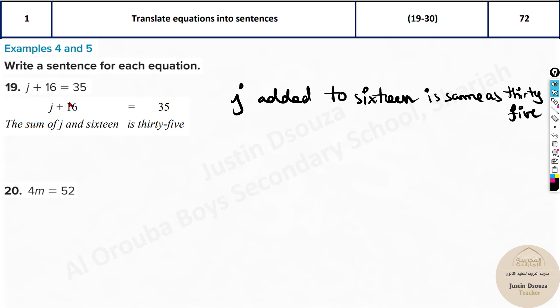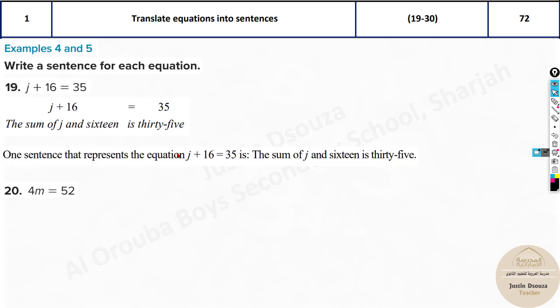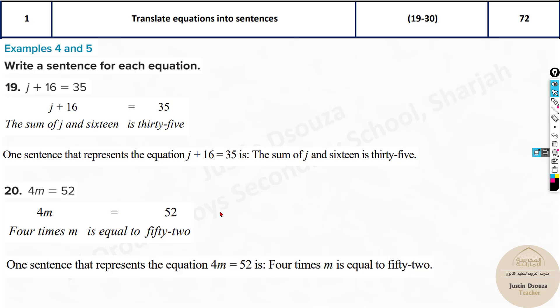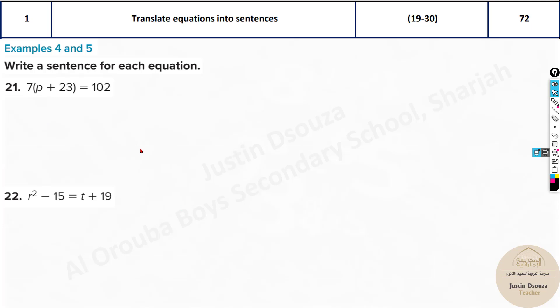So all these are correct answers. Just look into each and every option, all the four options. Look which closely matches to the given question and then finalize your answer. Same way, over here, the product of 4 and M is 52. Now one sentence that represents this - there are many possible answers. Four times M is equal to 52. This is one possible answer.